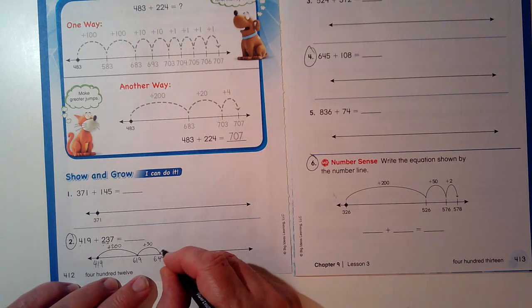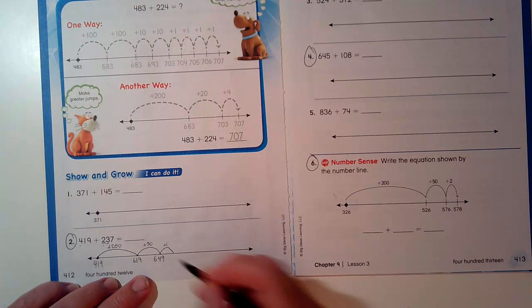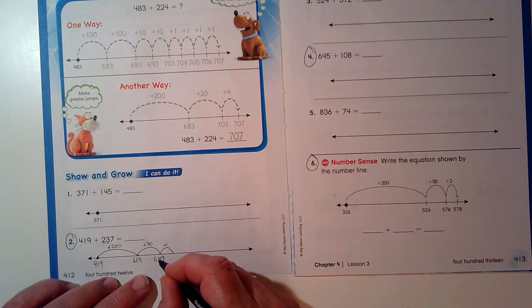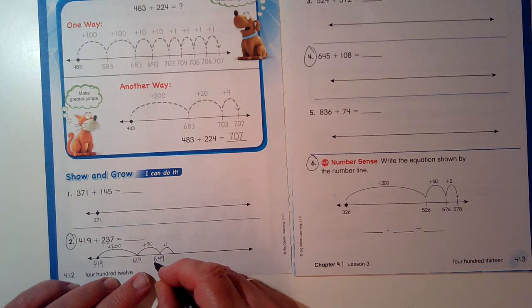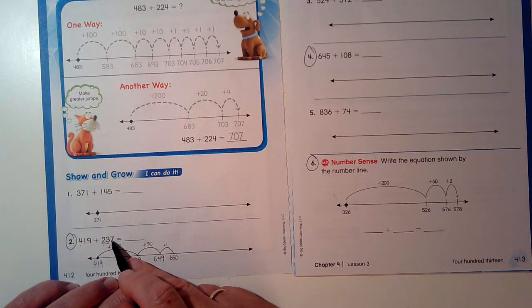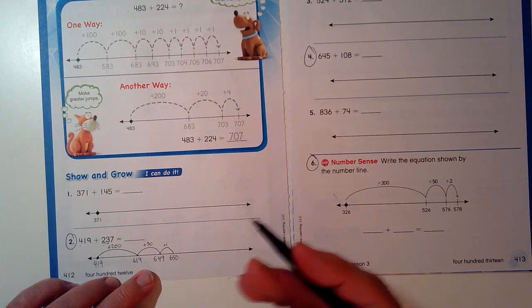So I'm going to do one set of one, and I know that will change 649 into 650, but I've only used one. I have six left to go.